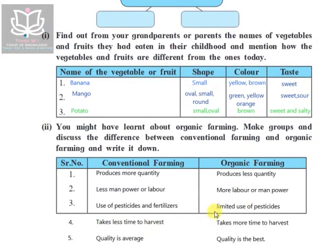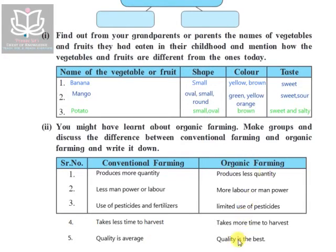In organic farming, because fewer fertilizers are used, it takes more time to harvest. The crops are seasonal and only available in particular seasons. In conventional farming, the quality is average — just satisfactory. But with organic farming, the quality of anything produced is the best.